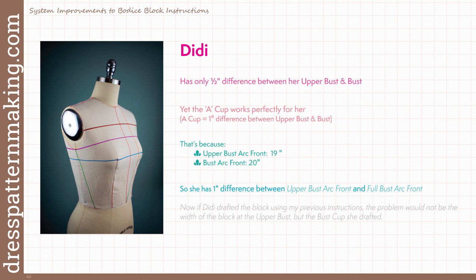So that means there is some assumption built into the pattern making bust cup system around what proportion of the difference between the upper bust and bust measurements is in the front and what proportion is in the back. But my new instructions will use the arcs, and that will solve the problem as it will remove any assumptions.